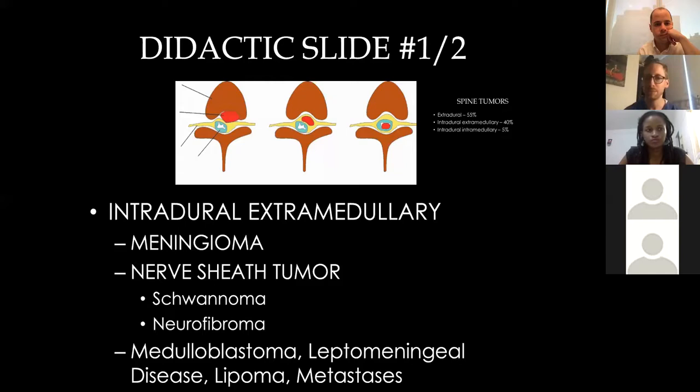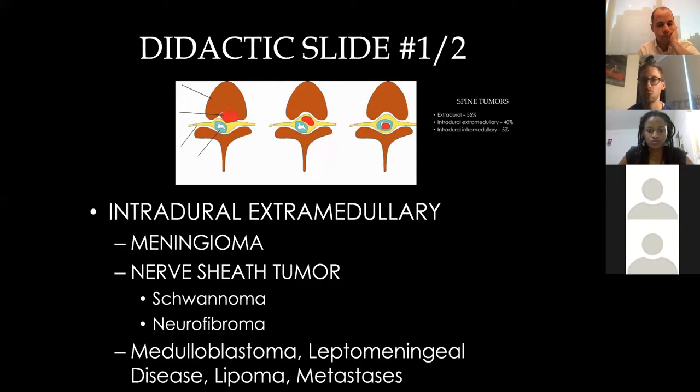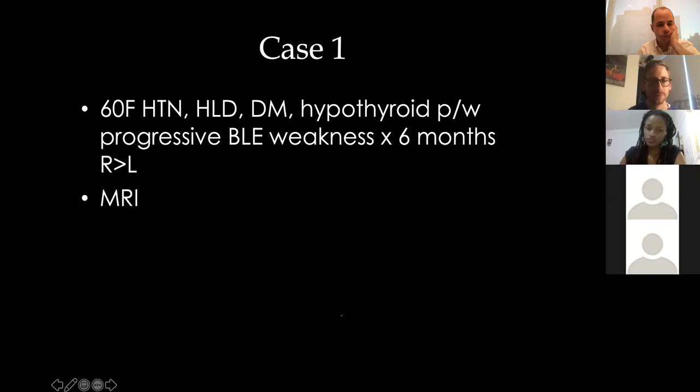Just keep this basic framework in mind: epidural tumors are 55%; intradural extramedullary tumors — what we're going to touch on for the first half of my talk — are 40%; and intradural intramedullary cases are more rare, about 5%.